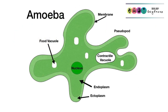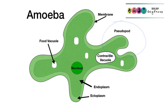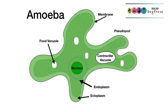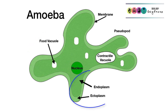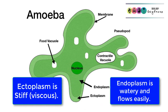When labelling or drawing an amoeba, it's important to always label the membrane, a pseudopod or pseudopodia, a contractile vacuole, the nucleus, a food vacuole, and then the two types of cytoplasm: endoplasm, which is watery and not that thick, and ectoplasm, which is more viscous or more stiff.